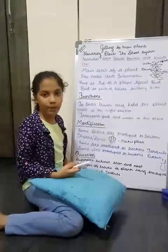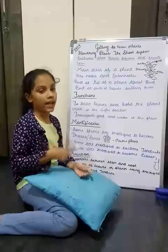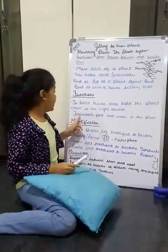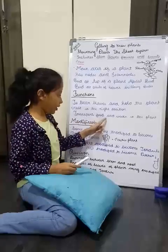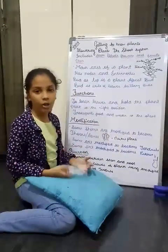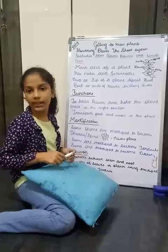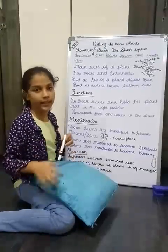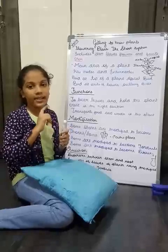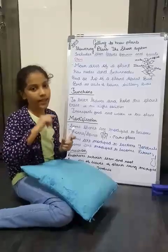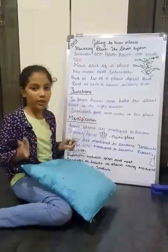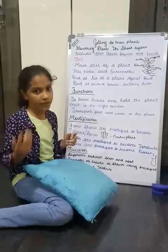The first and main function is that it bears leaves and holds the plant erect in the right position — in simple words, it acts as an anchorage. Second, it transfers food and water in the plant. The root takes all the nutrients and transfers them to the stem, and then the stem passes them to all the different parts of the plant.